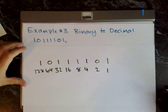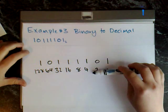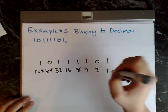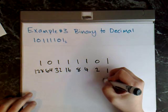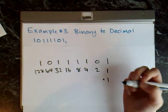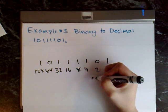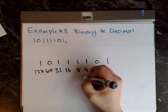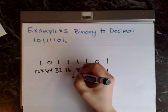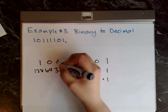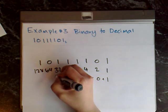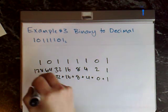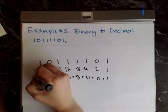And what I do now is again I just multiply the top number by its bottom number and then add them all together. So 1 times 1 is 1 plus 2 times 0 is 0, plus 1 times 4 is 4, plus 1 times 8 is 8, plus 1 times 16 is 16, plus 1 times 32 is 32, plus 0 times 64 is 0, plus 1 times 128 is 128.